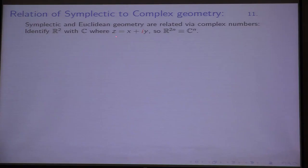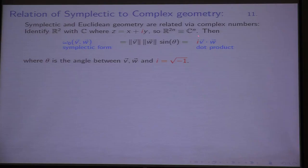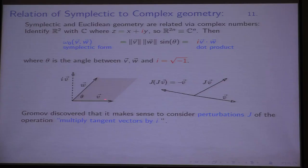Let me explain a little about the relation of symplectic and complex geometry. We think of the plane ℝ² identified with the complex numbers, where Z = X+iY. In ℝ²ⁿ = ℂⁿ, the symplectic form given by these pairs is |V|·|W|·sin(angle), which equals the dot product between iV and W — if you think of these as vectors in the complex plane, with i as multiplication by √(−1). So the symplectic form is the dot product between iV and W.